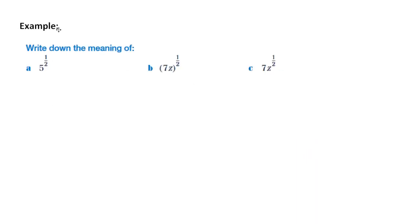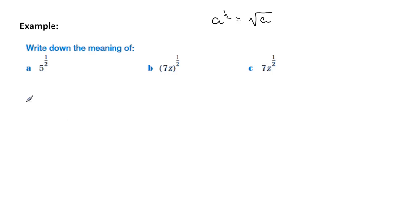In these examples, we need to write down the meaning of these particular expressions. The first one is reasonably straightforward — we just remember that if we have a to the half, then 5 to the half is exactly the same as the square root of 5. That's the way we're going to write it.